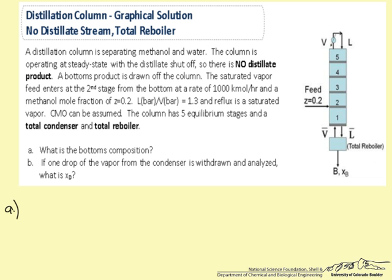For Part A, what is the bottoms composition? First, let's do an overall mass balance on methanol. Feed in times the composition of methanol in the feed, Z, equals the bottoms stream times the composition of methanol in the bottoms, plus the distillate stream times the composition of methanol in the distillate. We are told there is no distillate product being taken off, so this term is zero.